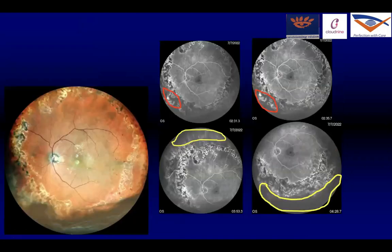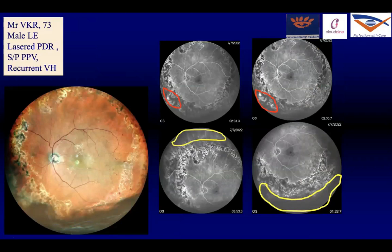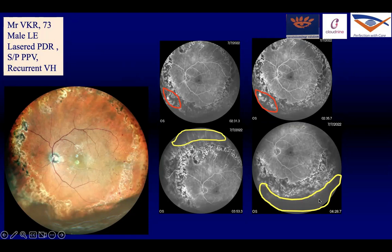This is a diabetic patient who had recurrent vitreous hemorrhages, underwent panretinal photocoagulation and a vitrectomy, and had a subsequent bleed once more. Once the bleed subsided and cleared, we did a fluid-air exchange, went ahead and did wide-field angiography, and found NVE with large areas of capillary non-perfusion, which were lasered, and the patient stopped having recurrent vitreous bleeds.